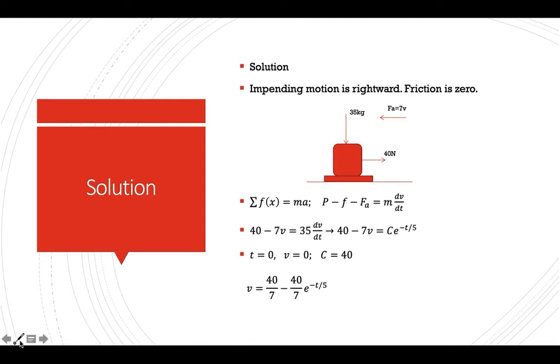Now, the impending motion is to the right. And the resisting force, which is the friction, should be directed opposite. But in this case, this is equal to 0, stated that the surface is smooth.